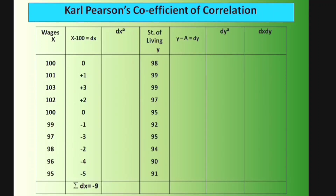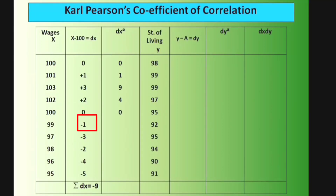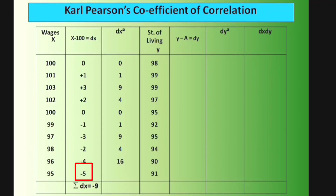Now computing dx²: 0²=0, 1²=1, 3²=9, 2²=4, 0²=0, (−1)²=1, (−3)²=9, (−2)²=4, (−4)²=16, (−5)²=25. Summing these values: 1+9+4+1+9+4+16+25 = 69. Therefore Σdx² = 69.